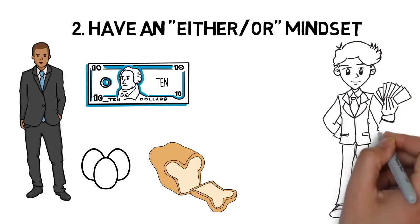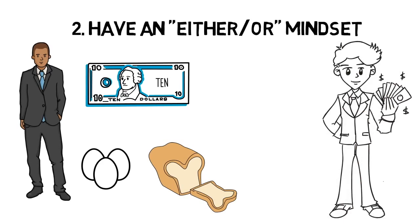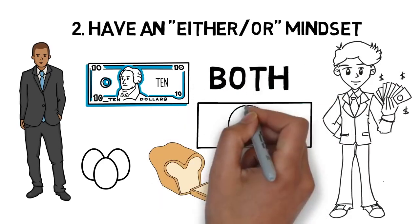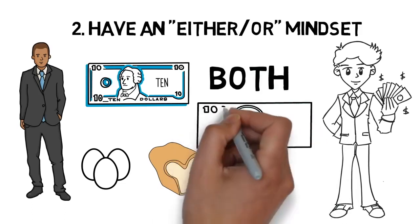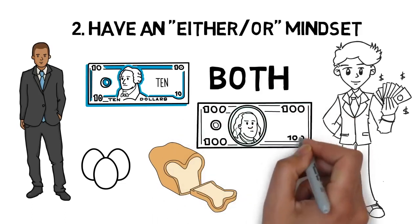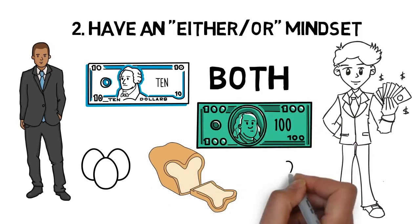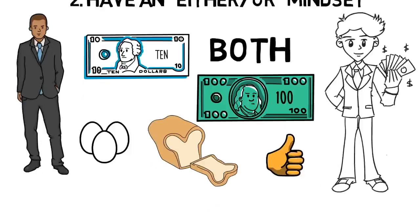So instead of limiting their profits by maintaining their budget, they use a both mindset and expand their budget to maintain their profits. This kind of innovative problem solving is what allows rich people to navigate difficult obstacles on their road to success, because they don't let what they have limit what they can do.